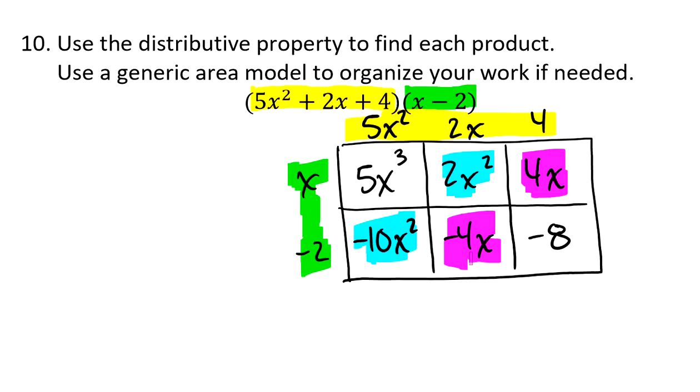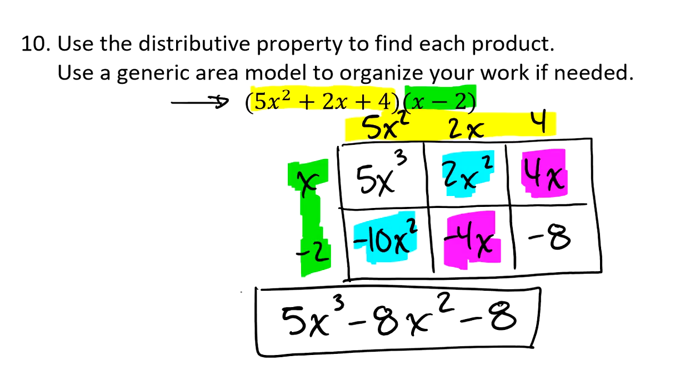So if I'm going to write this answer down right here, the sum of the parts. I've already got here the product of the dimensions. But as the sum of the parts, when I simplify this, I'm looking at 5x³. And then I've got a negative 10x² plus 2 more, which would be a negative 8x². And when I combine 4x and negative 4x, that's 0. So the last thing I've got there is minus 8.